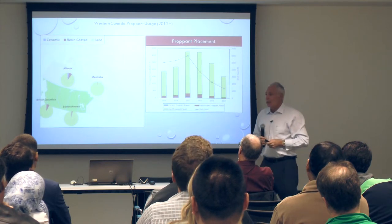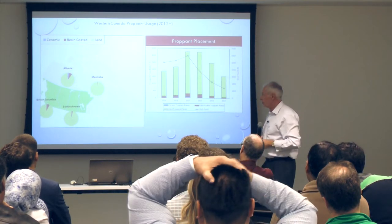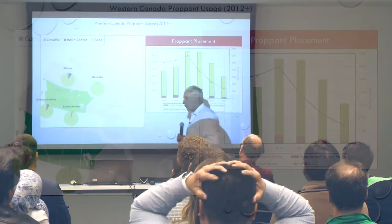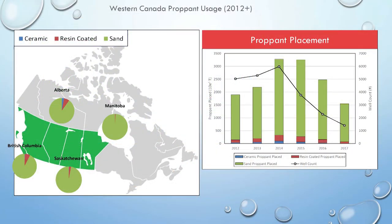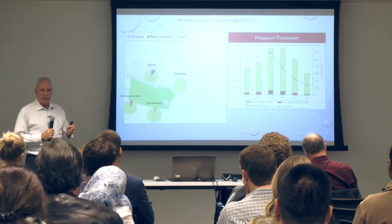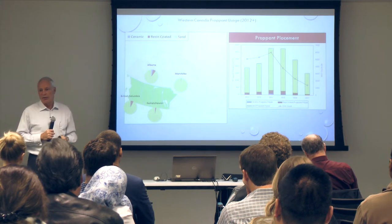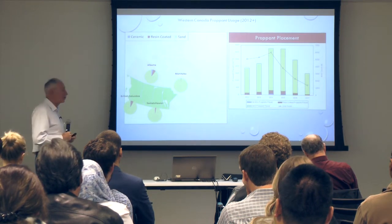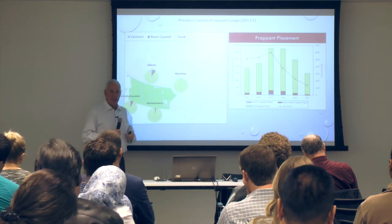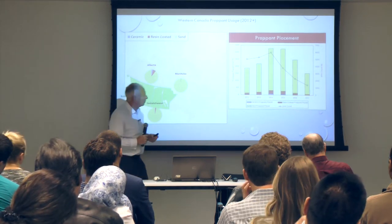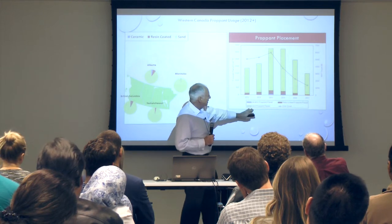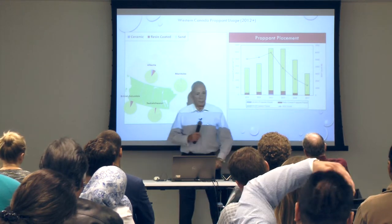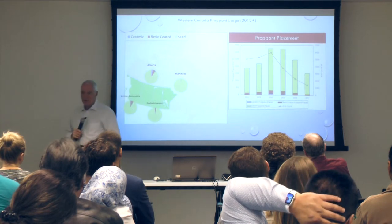Looking at completed length, there's a clear trend toward longer laterals. The number of stages is increasing, so the distance between frack stages is going down — fracks are getting closer and closer together. When we look at propant type, resin-coated propants have lost favor; it's becoming predominantly sand. Ceramics have also lost favor, likely because the depths of these reservoirs are not overly large, making sand an effective propant.